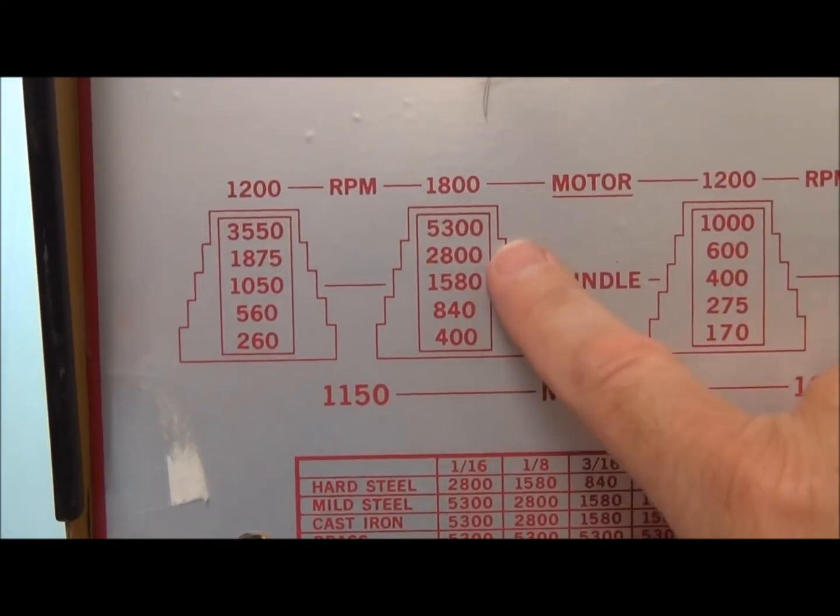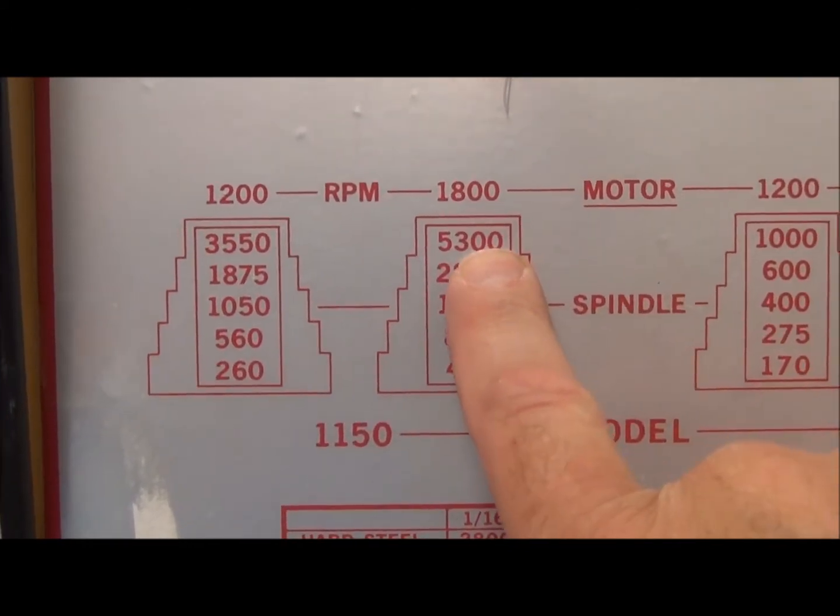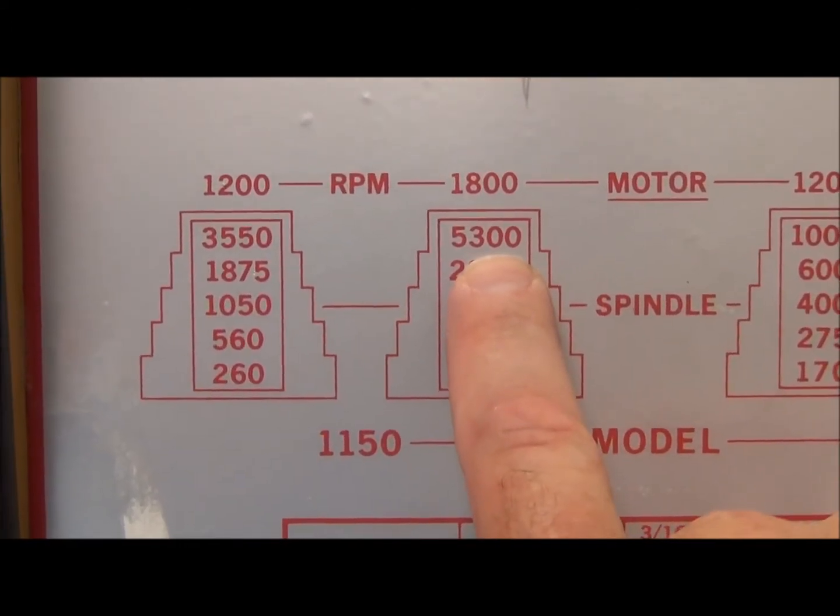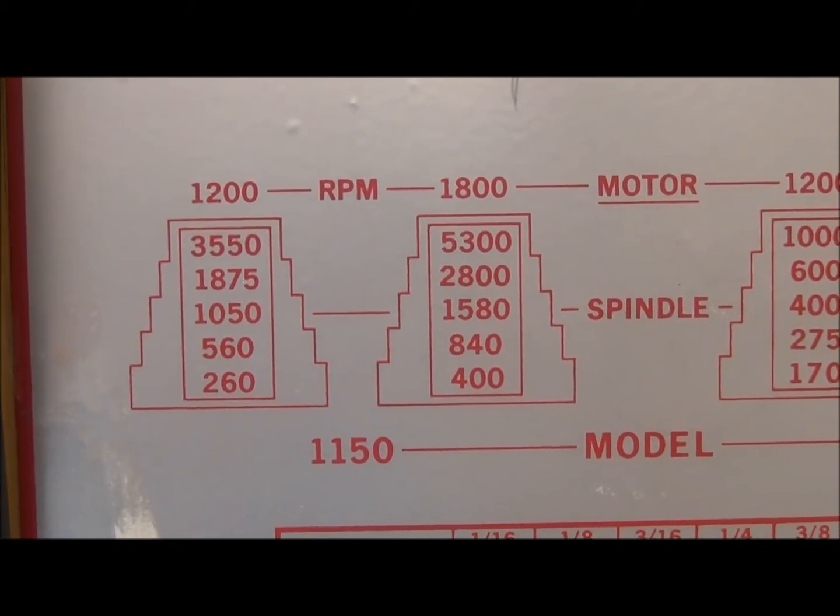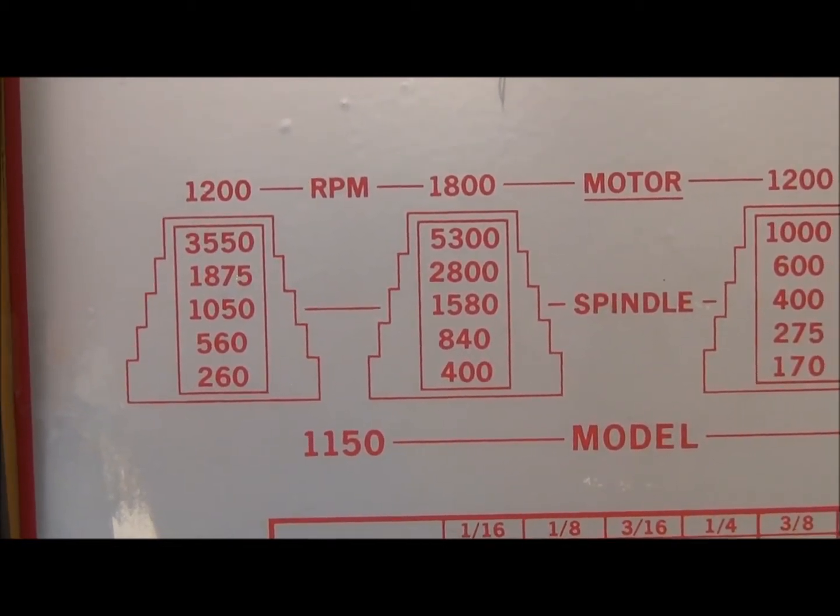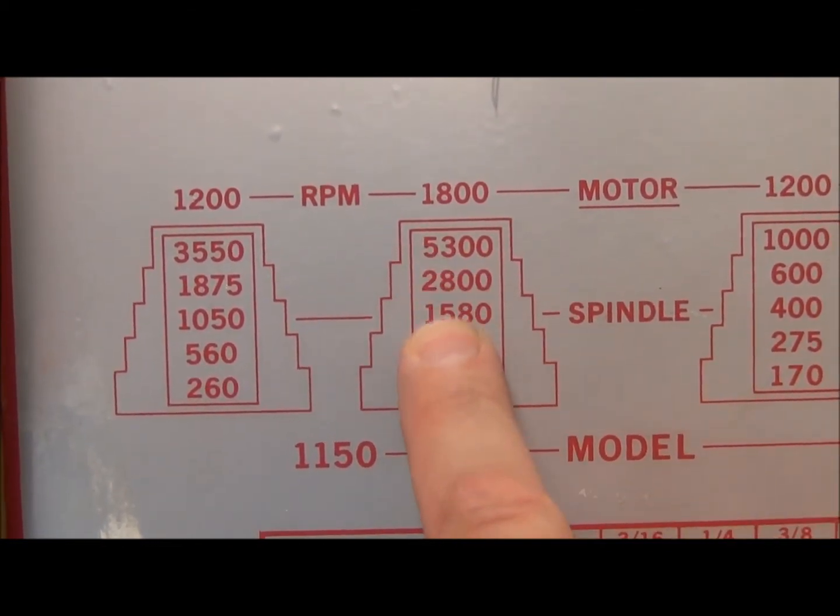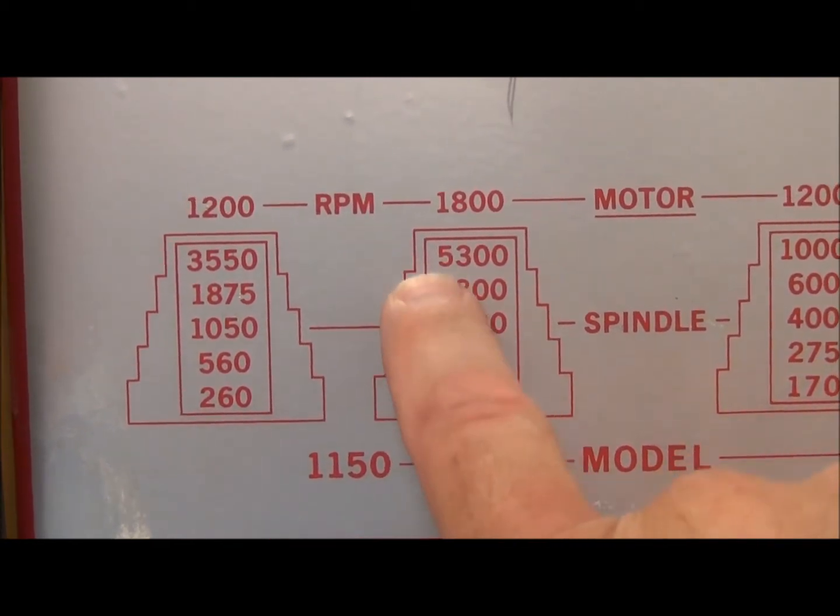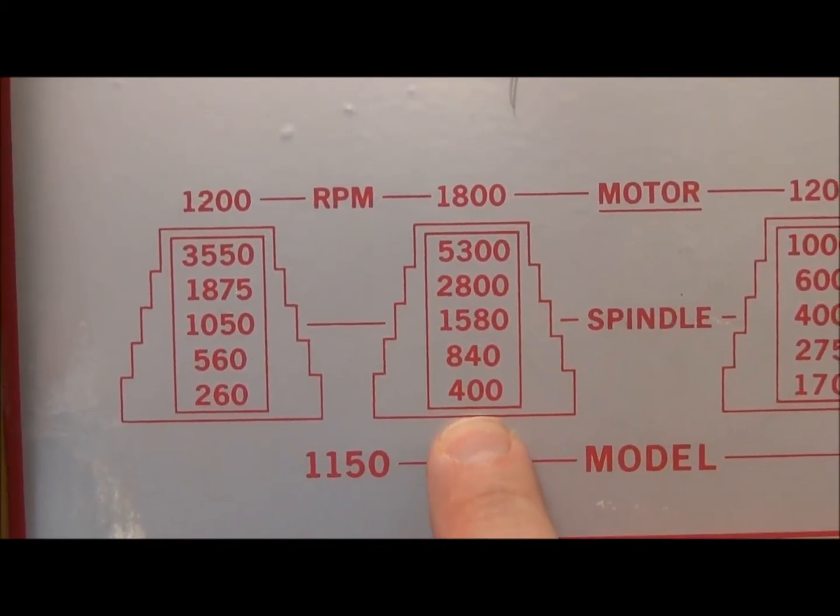So if we put our belt on the highest pulley position, 5300 revolutions per minute is what we're going to get at the spindle right here. And we go down and set it on the lowest speed at the bottom of the stack, it's going to be 400 revolutions per minute.